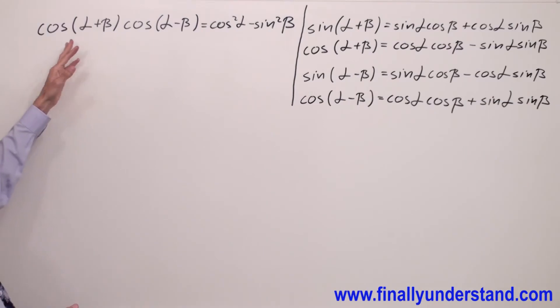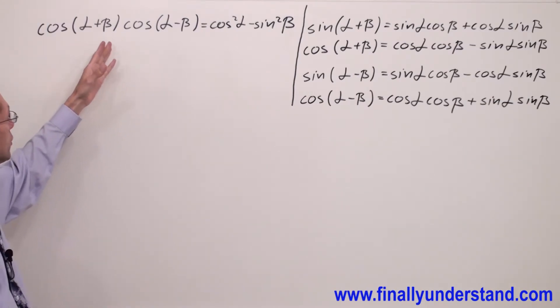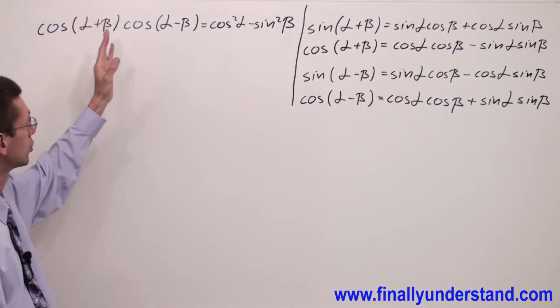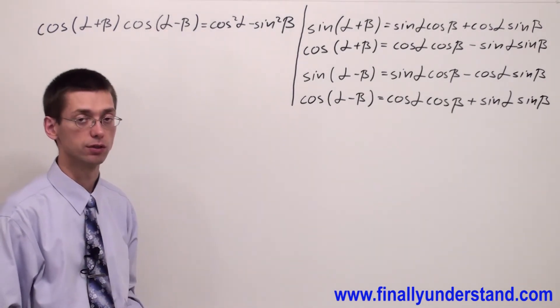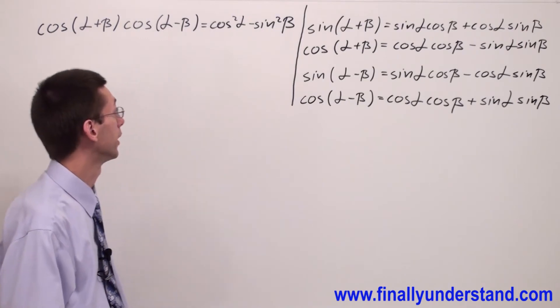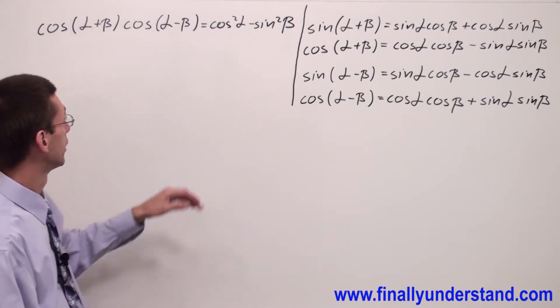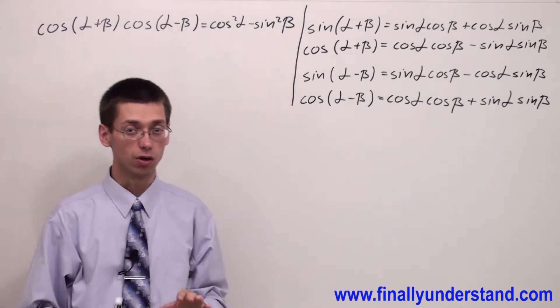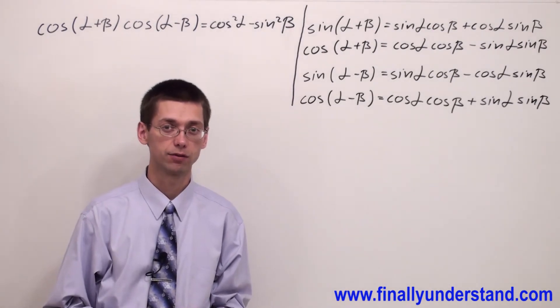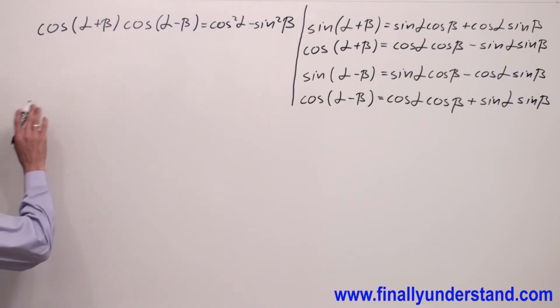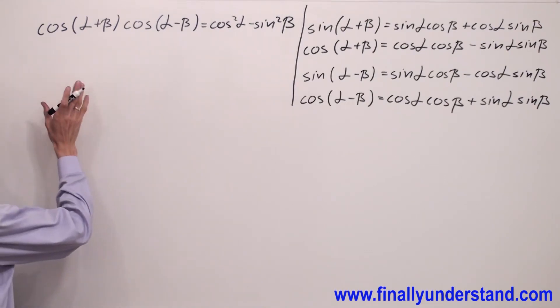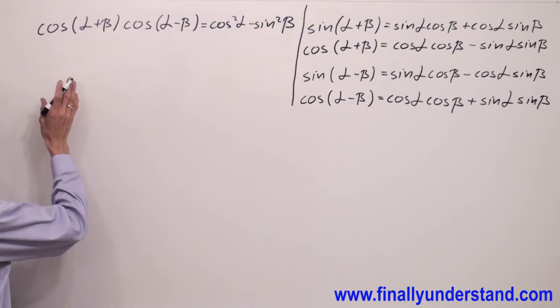Let's take a look at this example. This time we have the cosine of the sum of two angles multiplied with the cosine of the difference of two angles on the left side of the equation. The right side is less complicated than the left side, that's why I'm going to start — I mean, prove this problem from the left side.